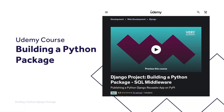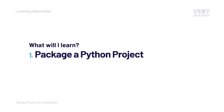This tutorial is part of our building a Python package course where we learn how to build, test, and automate deployment of a Python Django middleware package to the Python Package Index. You can watch the entire course uninterrupted, ad-free, and access updated tutorial source code and other resources from our Udemy course. Alternatively, you can access the course via our YouTube playlist. Links can be found in the video description.